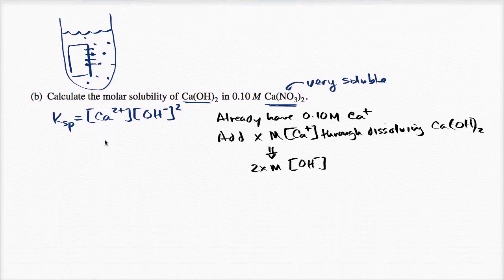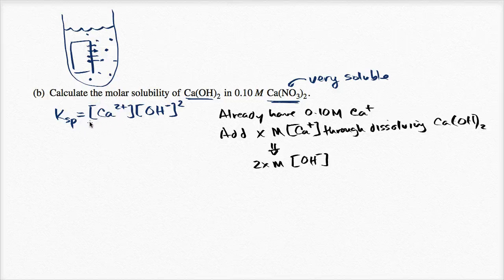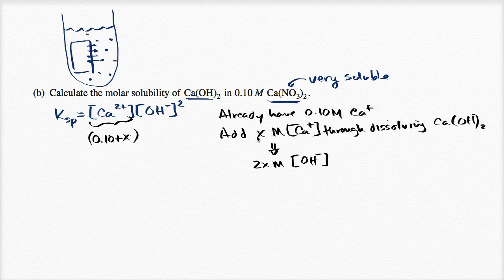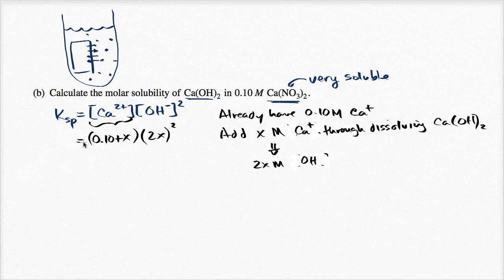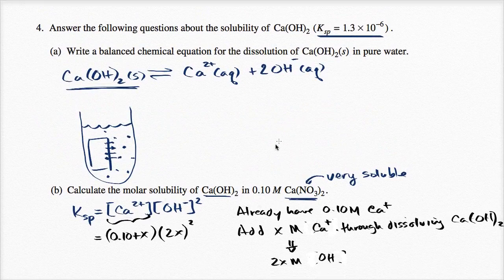How do we use that with the solubility product? The concentration of calcium ions is the 0.10 you already had plus x that you add. The concentration of hydroxide is 2x — for every calcium added, you add twice as many hydroxides — and of course you square that. That equals the solubility product, which they tell us is 1.3 × 10⁻⁶.